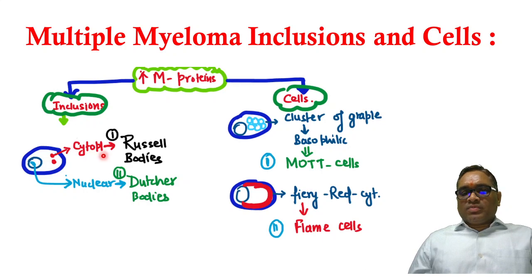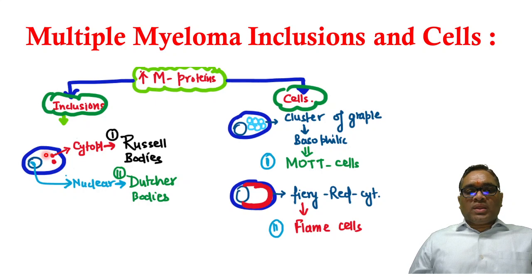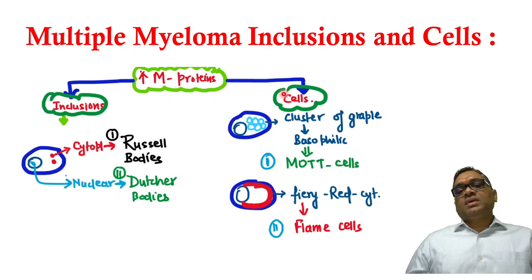When deposited in the cytoplasm, they are called Russell bodies. When there is excessive M protein in the nucleus, they are called Dutcher bodies. So: cytoplasmic inclusions are Russell bodies, and nuclear inclusions are Dutcher bodies.